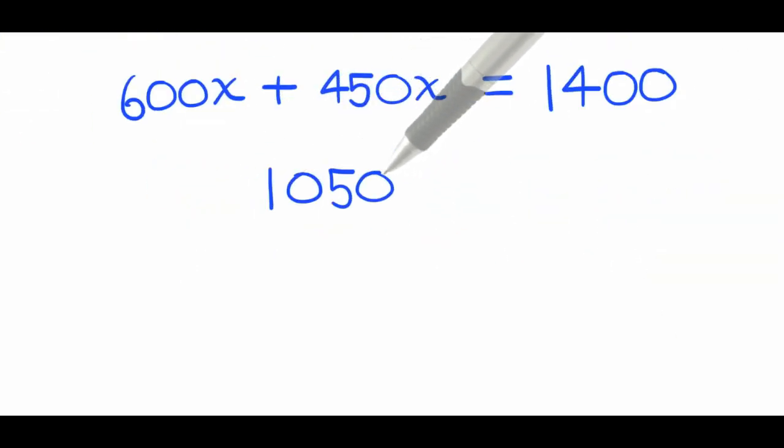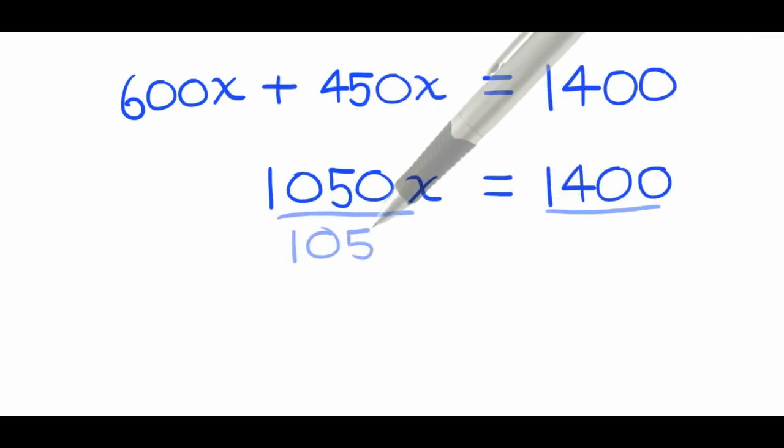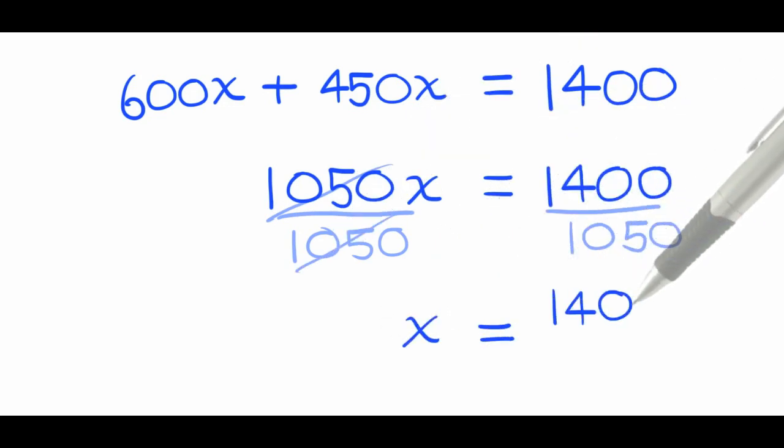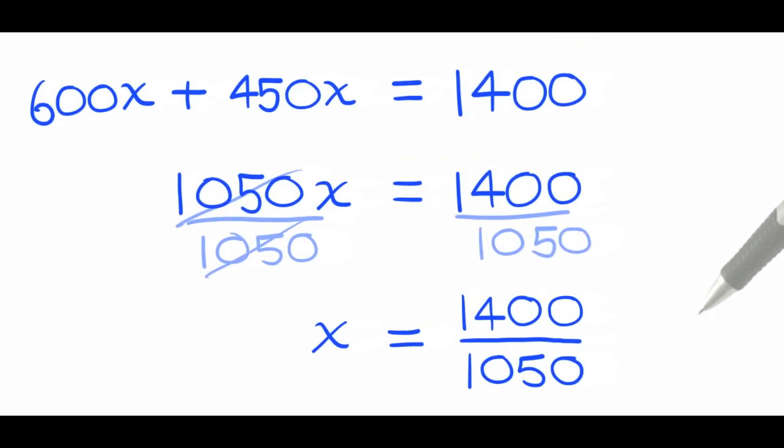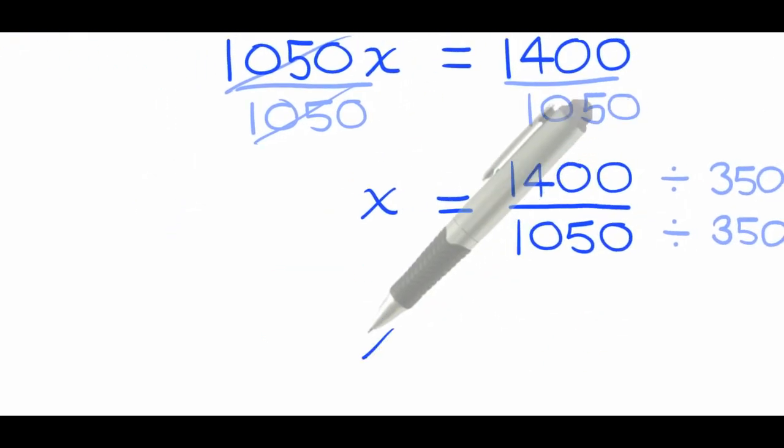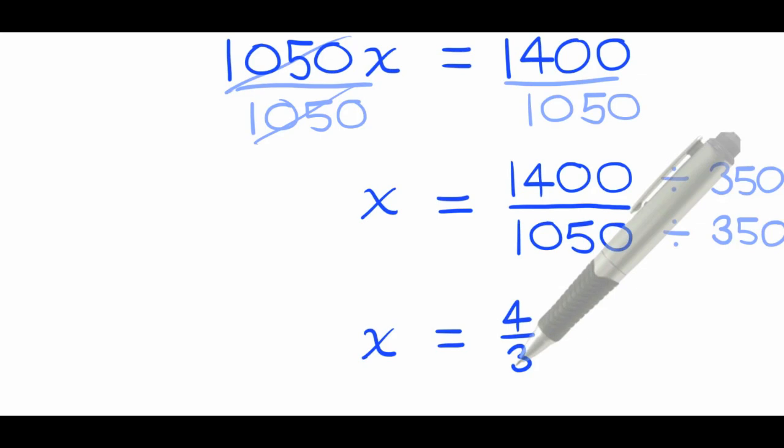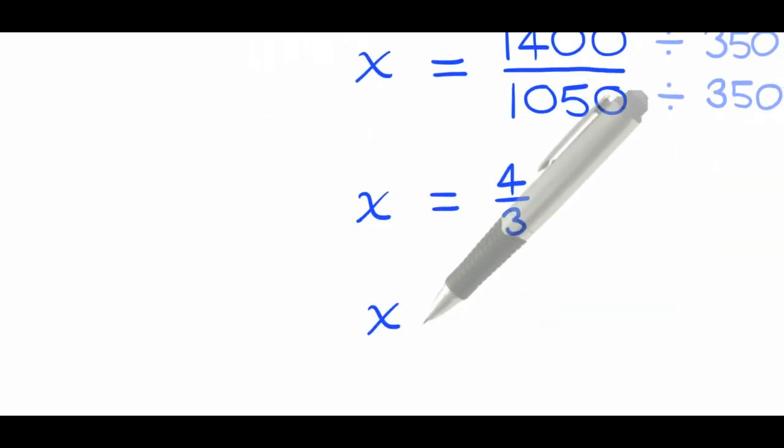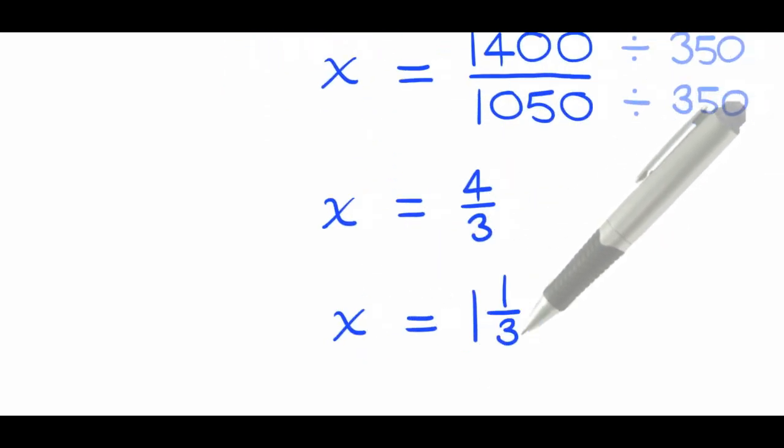Combine similar or like terms, we get 1,050x equals 1,400. Divide both sides by 1,050. We are left with x equals 1,400 over 1,050. Reduce by dividing the numerator and denominator by their greatest common factor, 350. The result is 4 thirds. We should convert this improper fraction into a mixed number. That is 1 and 1 third.